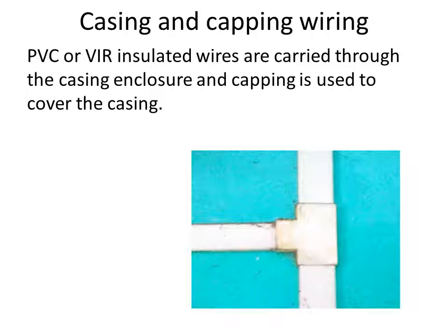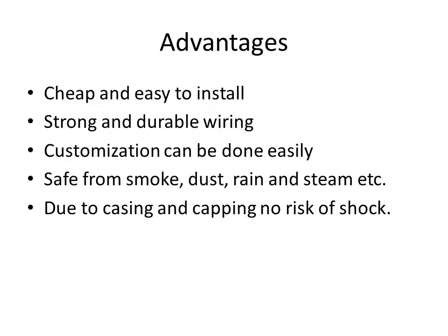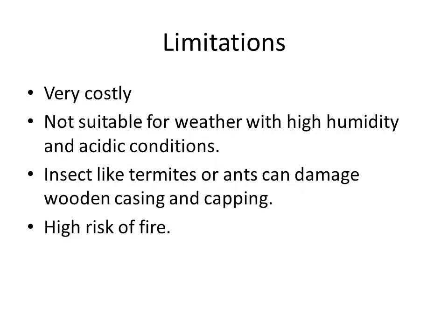In past times, wooden casing and capping was used, but nowadays it is made of PVC material. Advantages: cheap and easy to install, strong wiring, easy extension, and safe from smoke and dust as wires are protected inside — no risk of shocks. Limitations: costly compared to cleat and batten wiring, not suitable for high humidity and acidic conditions, termites can damage wooden casing, and there is a high risk of fire in both PVC and wooden cases.